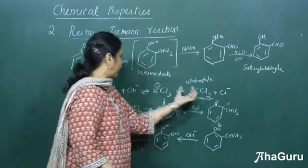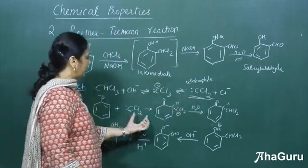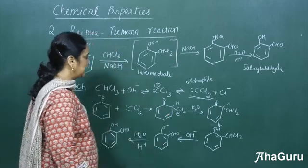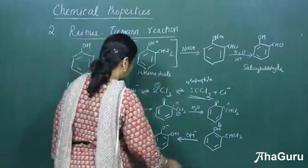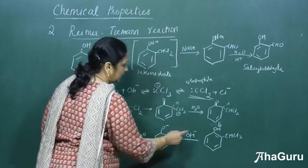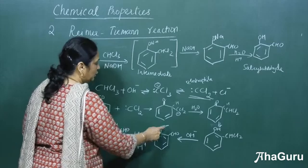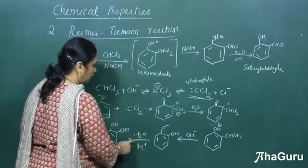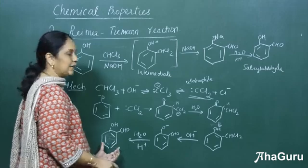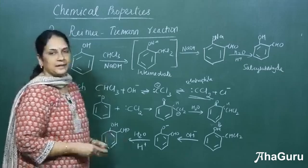This dichlorocarbene electrophile attacks the phenol ring, forming intermediate compounds. In the last two steps, using a base, the CHCl₂ group gets converted to CHO. Hydrolysis in the presence of H⁺ gives salicylaldehyde, which is also called orthohydroxybenzaldehyde.